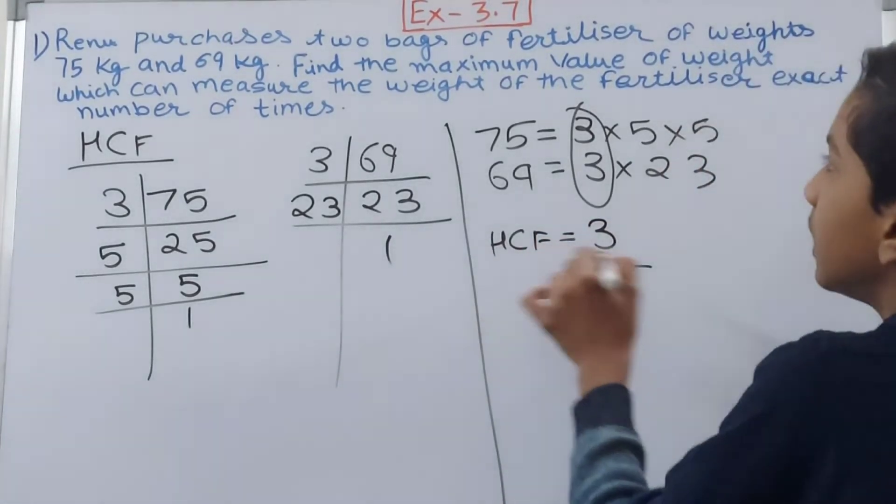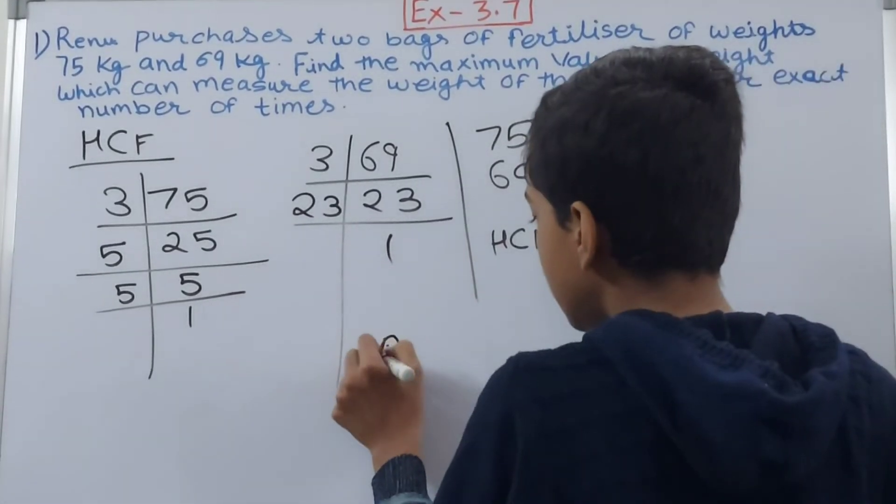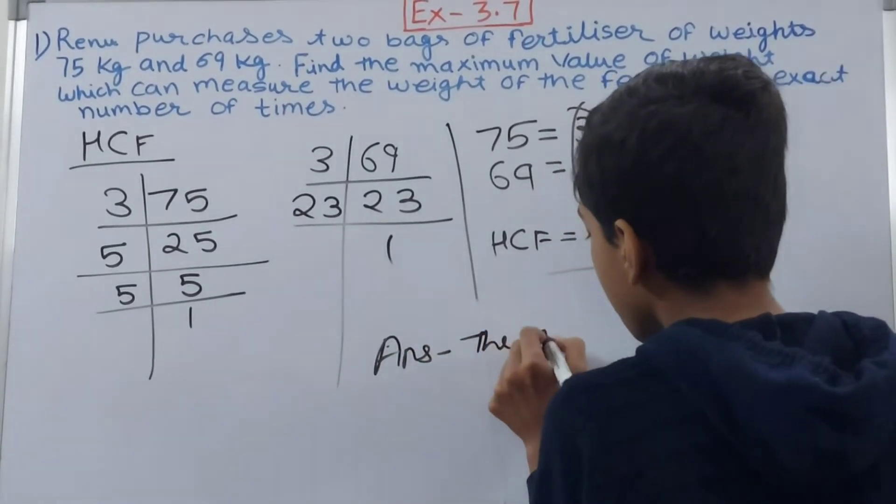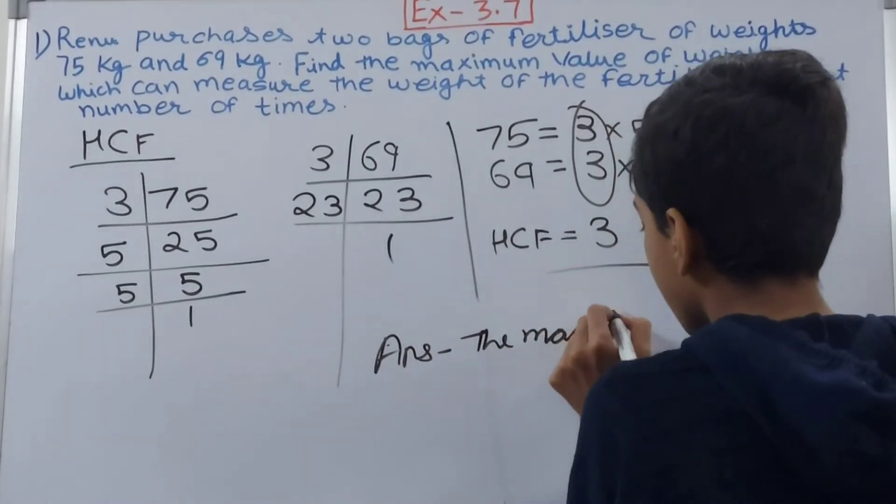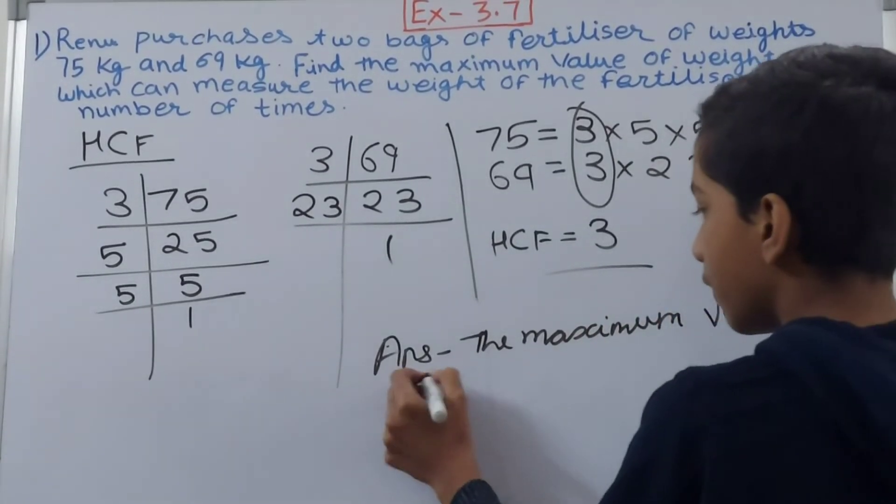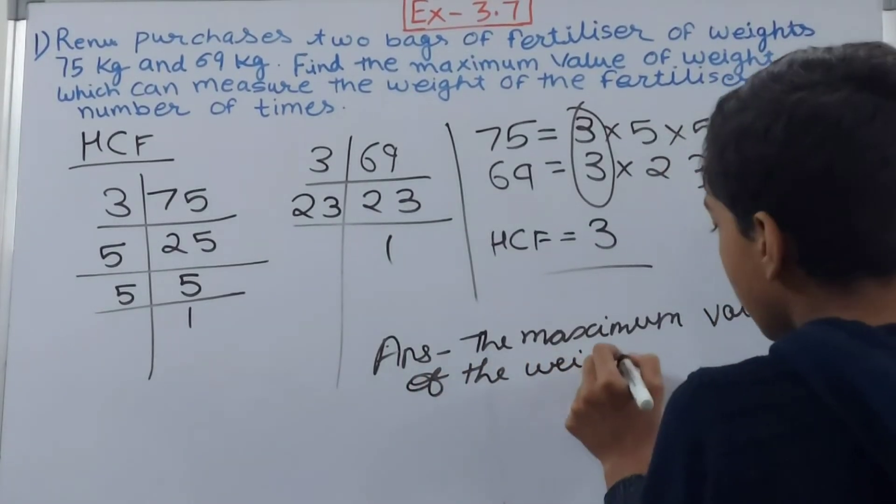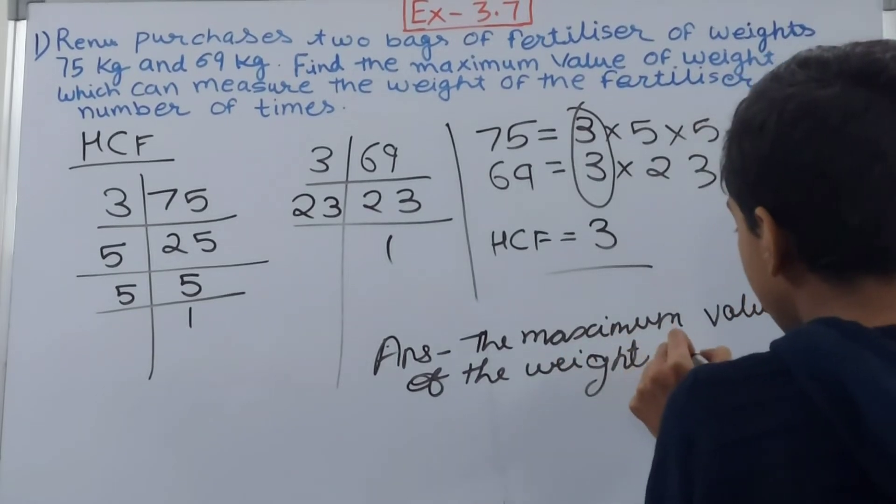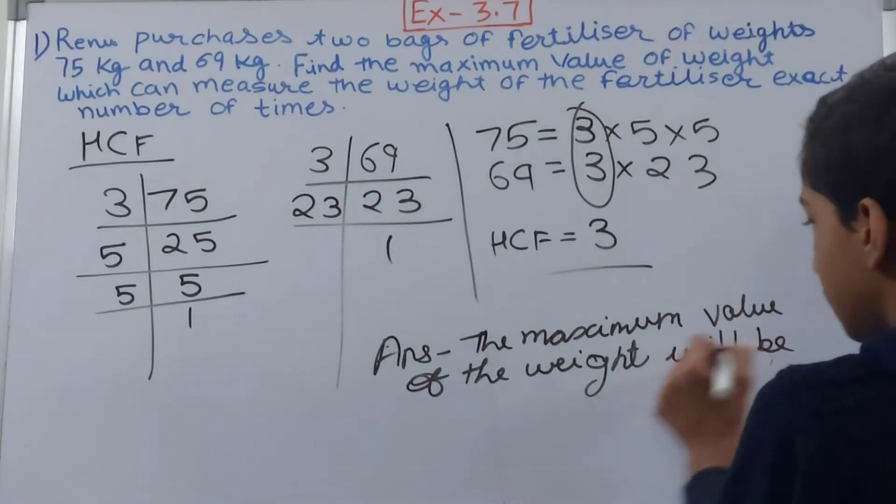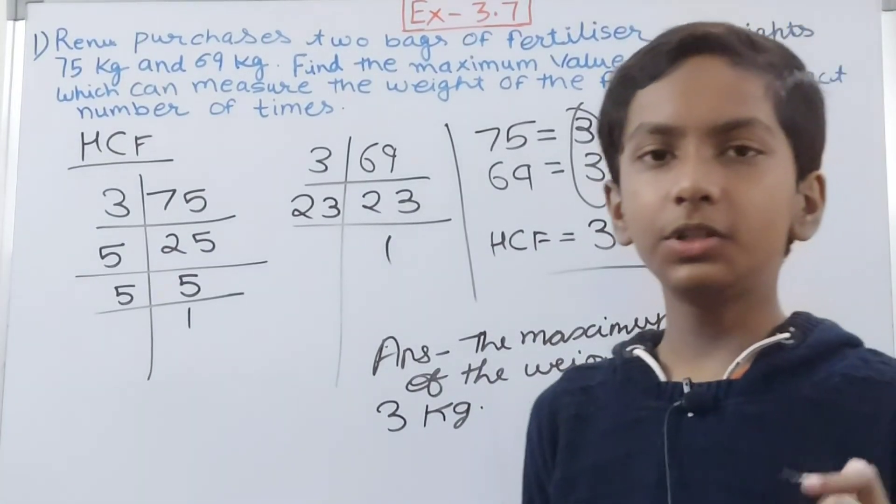That means the answer will be that the maximum value of the weight will be 3 kg. So that means she should take a weight of 3 kilogram that will measure 75 exactly and 69 exactly as well.